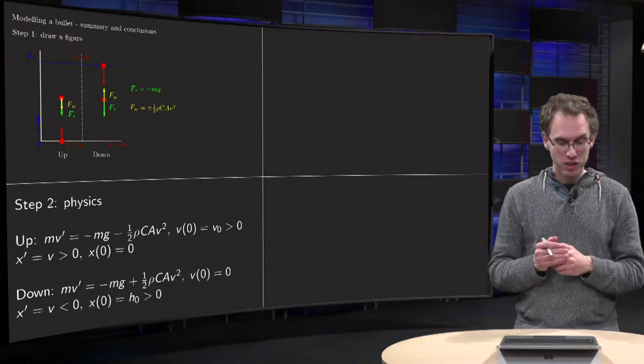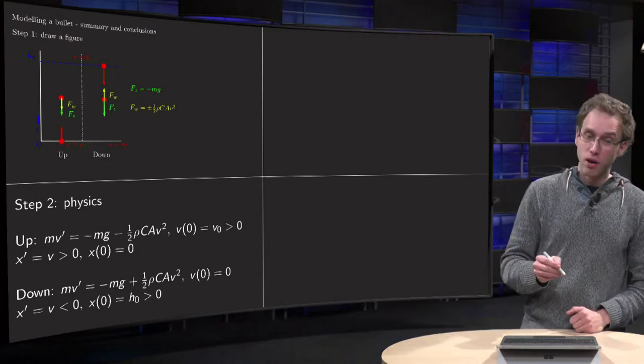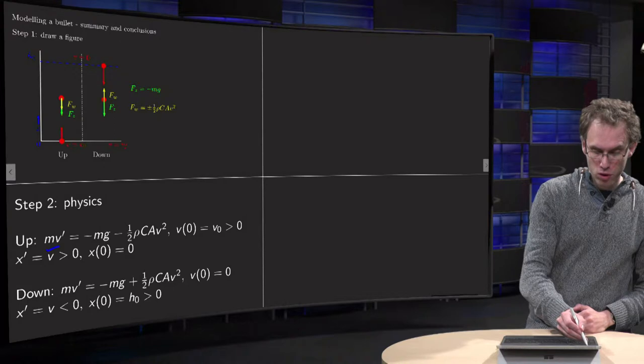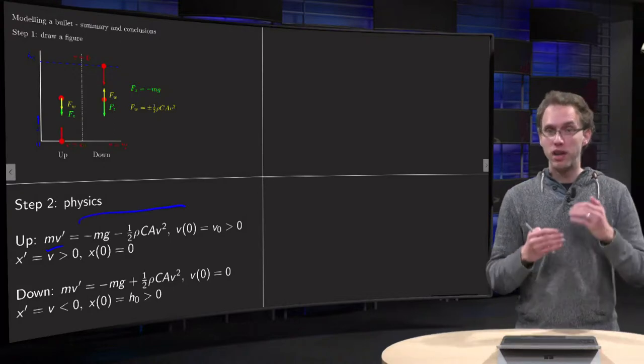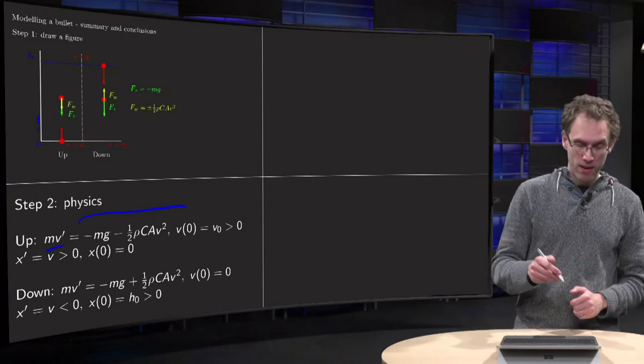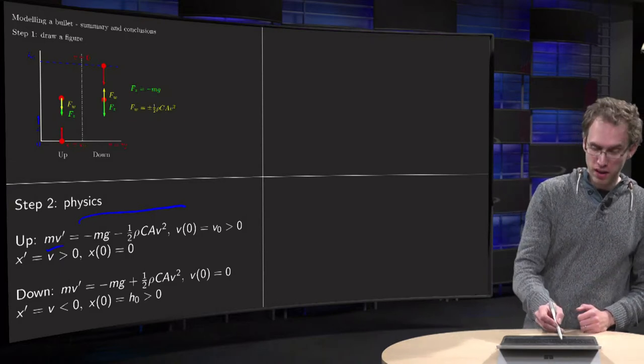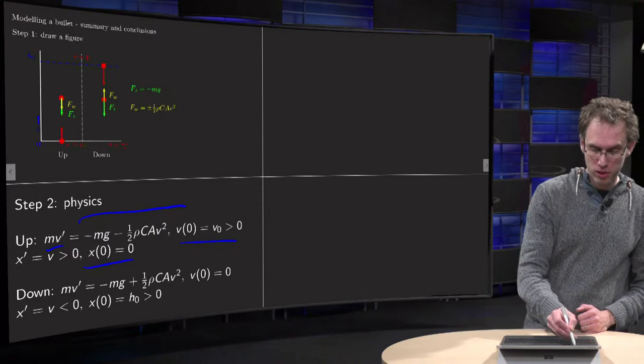Summarize the physics. What do we have? Going up, Newton's law equals total force, gravity and friction. Specify the initial conditions.